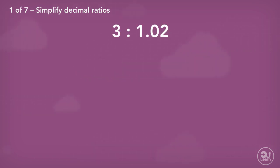Another example: simplify 3 to 1.02. What would we have to multiply the decimal by to make it a whole number? By multiplying 1.02 by 100, which is a multiple of 10, the whole number we get is 102.